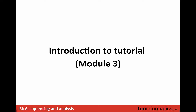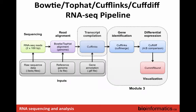That's it for the lecture side — we're going to jump into the tutorial for Module 3 now. Recall that so far we've gotten our raw data and done read alignments against the reference genome using the GTF file for gene annotations. Now we're going to compile transcripts, estimate expression levels, do differential expression after the CuffMerge step, and finally visualize results with CummeRbund and the supplementary R tutorials.